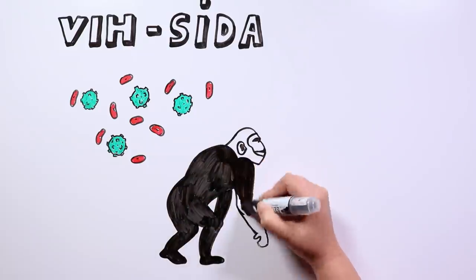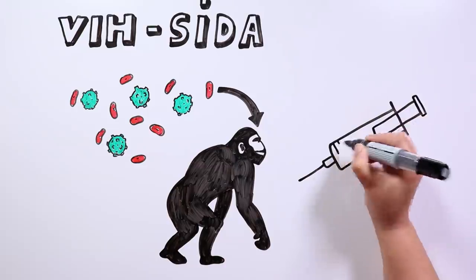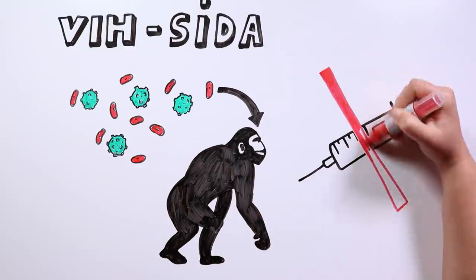However, its spread actually took place in the 1980s. Today, with the right treatment, HIV can be controlled even though there is no vaccine for it yet.